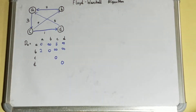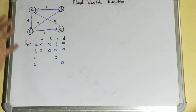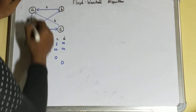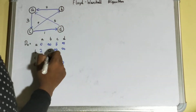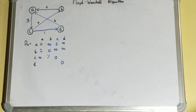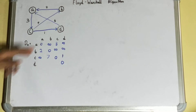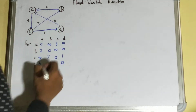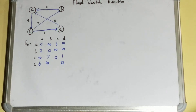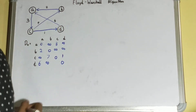Now for C — you need to be very careful here. If you make one mistake in your D0 matrix, your whole solution will go wrong, so double-check and double-verify everything. C to A: there is no way, so it is infinity. C to B is seven. C to D is one. Then D to A we have six, D to B is infinity — no edge — and D to C is also infinity.